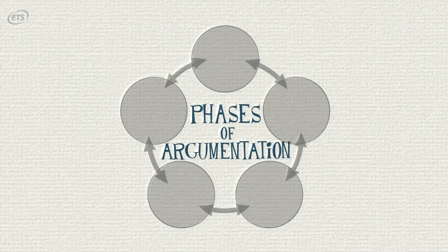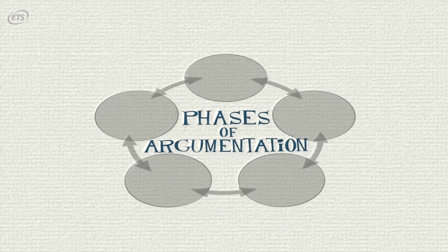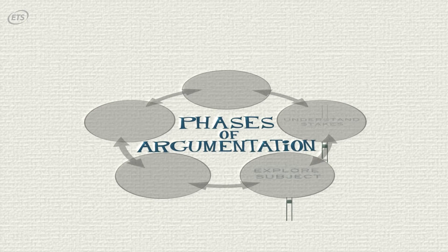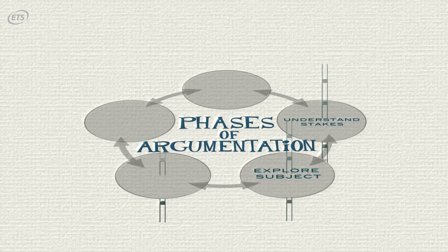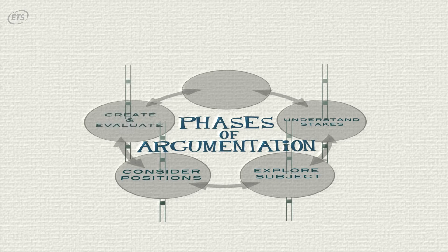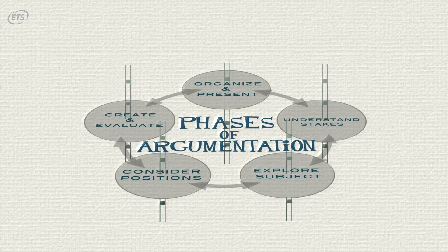Our learning progressions capture this kind of unfolding of argumentation skills, where people gradually develop the ability to make better claims, to find good reasons to support those claims, to elaborate evidence to back up those reasons, and to rebut other people's reasons and consider possible counter-attacks while trying to build their own arguments.